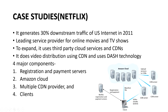Netflix needs four components for video distribution. As you can see in this diagram, there are four components: registration and payment servers, Amazon cloud, CDNs, and the client. If a client wants to watch a video on Netflix, he first has to register and provide payment for the service, which is handled by the registration and payment servers.